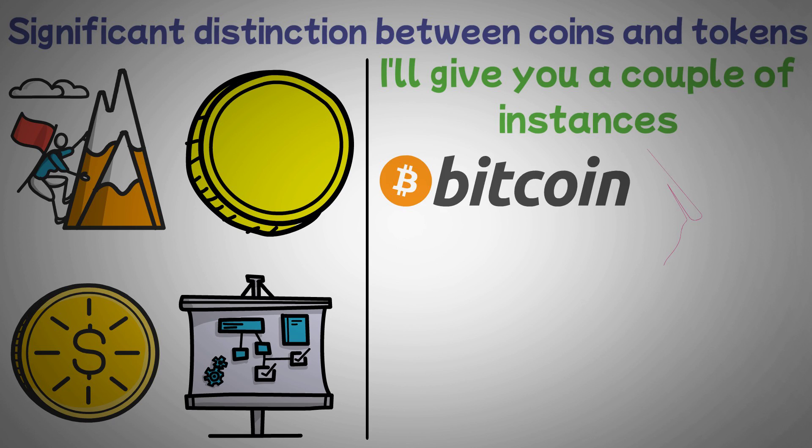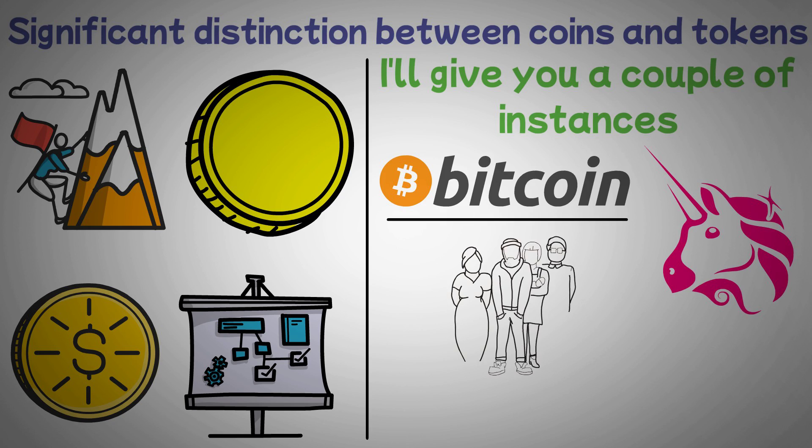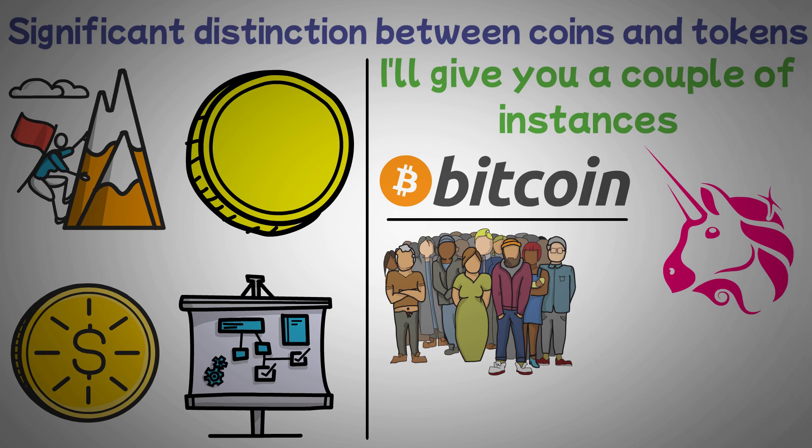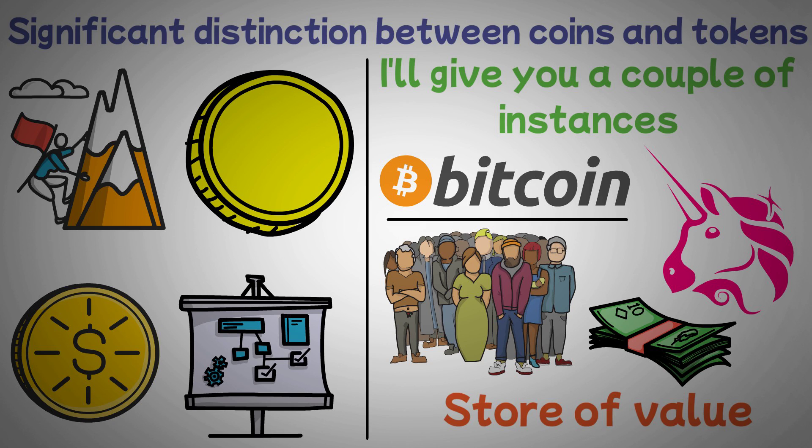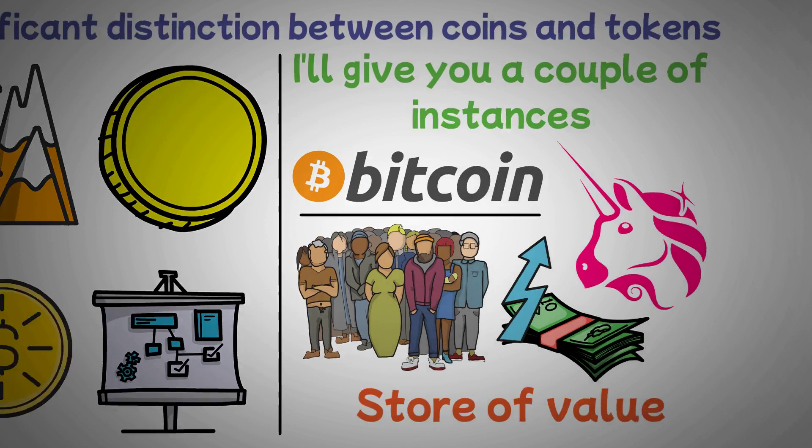Take Bitcoin or the Uniswap token as an example. The most popular cryptocurrency currently available is Bitcoin. The majority of individuals concur that Bitcoin's use case is that of a store of value, which means that those who invest in it do so in the expectation that their money will either increase in value or at the very least maintain its worth. I think this is a pretty general and broad use case.